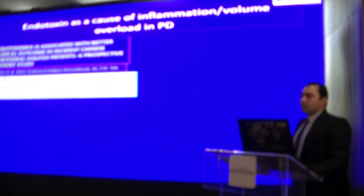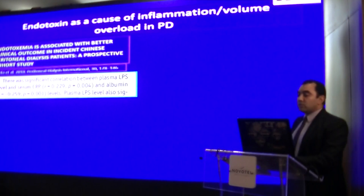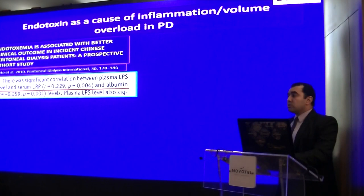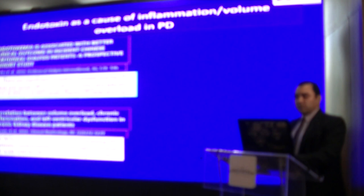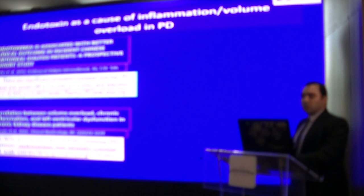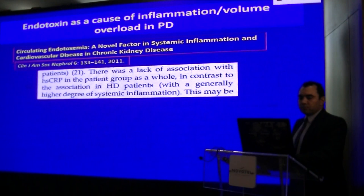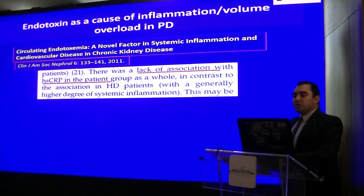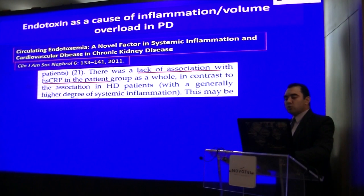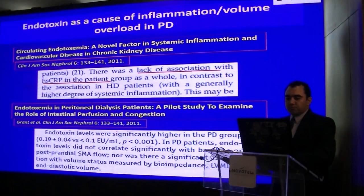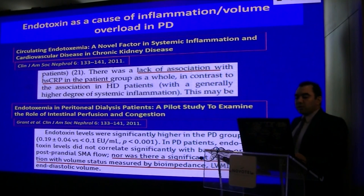When exploring in the literature whether endotoxin levels are responsible for the inflammatory response and volume overload in peritoneal dialysis patients, we get different answers. One study found significant correlation between plasma lipopolysaccharides and serum CRP and albumin. Another study found endotoxemia strongly correlated with over-hydration and extracellular water percentage. A third study reported significant correlation between CRP and plasma lipopolysaccharide. On the other side, one study reported lack of association between endotoxins and high-sensitivity CRP in the patient group as a whole, and another study did not report a significant association between volume status measured by bio-impedance and endotoxin level.